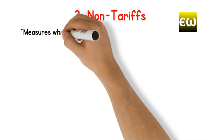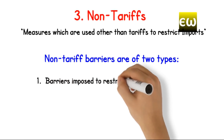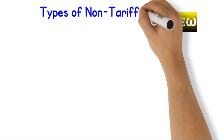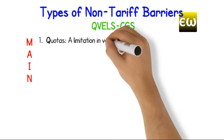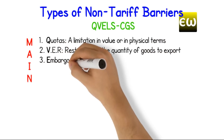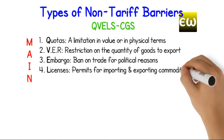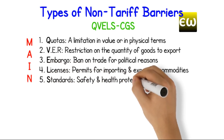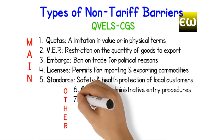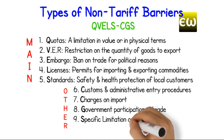Non-tariffs are measures used other than tariffs to restrict imports. Non-tariff barriers are of two types: barriers imposed to restrict imports directly, and barriers imposed to encourage domestic production. Types of non-tariff barriers include: 1. Quotas — a limitation in value or physical terms. 2. Voluntary export restriction — restriction on the quantity of goods to export. 3. Embargo — ban on trade for political reasons. 4. Licenses — permits for importing and exporting commodities. 5. Standards — safety and health protection of local customers. 6. Customs and administrative entry procedures. 7. Charges on imports. 8. Government participation in trade. 9. Specific limitation on trade. 10. Standards.